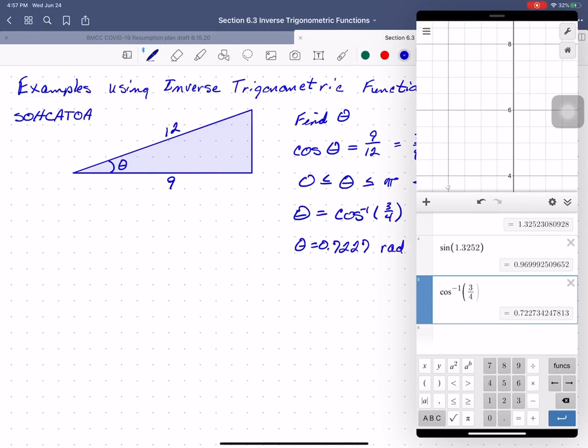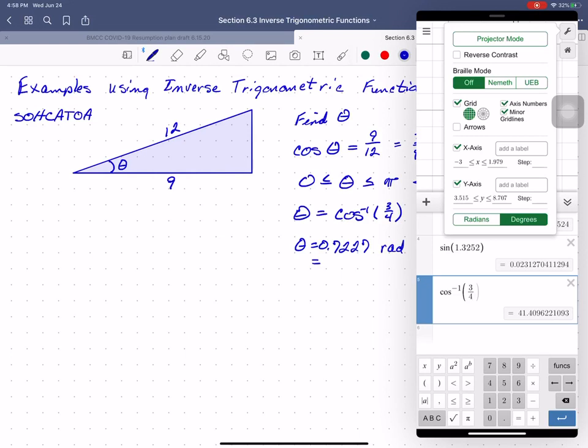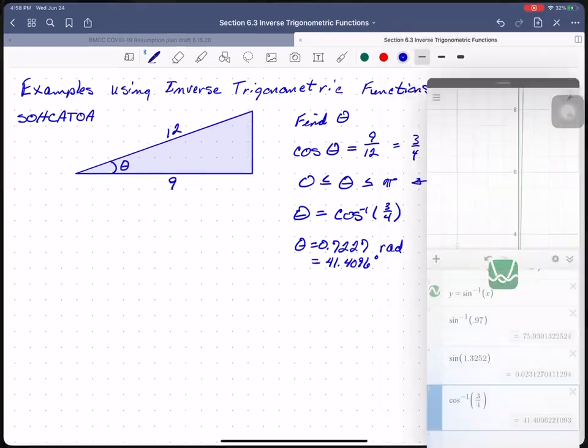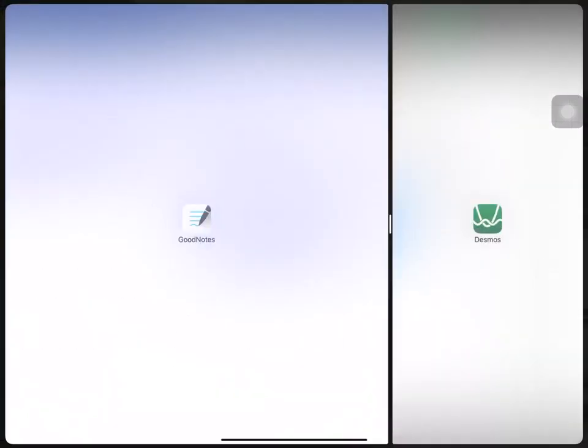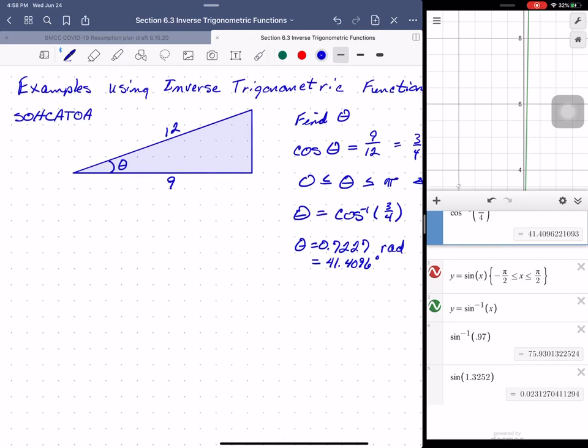Typically on triangles we're really going to want degrees, so go up here to your little gear and change yourself to degrees, and Desmos tells you that the inverse cosine of three-fourths is also 41.4096 degrees. Okay, so in the absence of special known unit circle values, calculator answers are going to be acceptable.